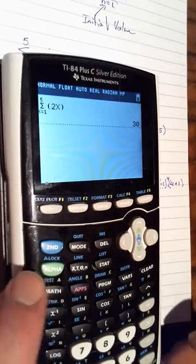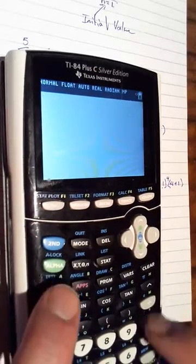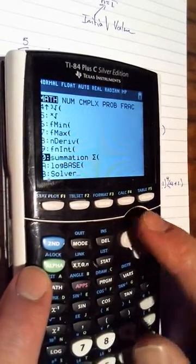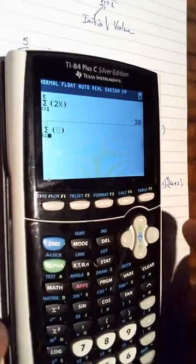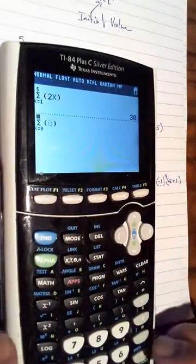Let's go ahead and do the third example. So we'll go math, we'll scroll up, we'll go to summation, and we'll again set x, but this time remember our index was zero, so we'll set our index to zero and we'll go up to 4.